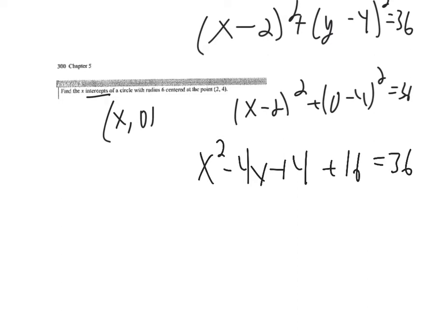We have a quadratic equation, so we combine like terms and set it equal to zero. Bringing 36 over: x² − 4x + 20 − 36 = 0, which gives x² − 4x − 16 = 0.